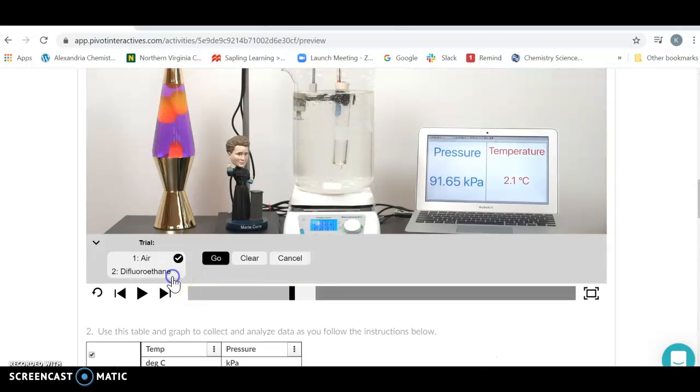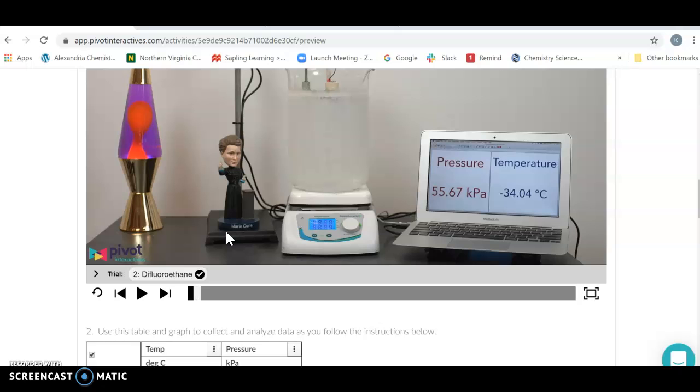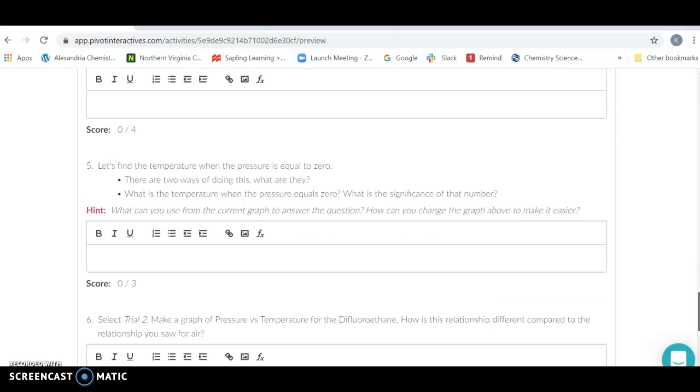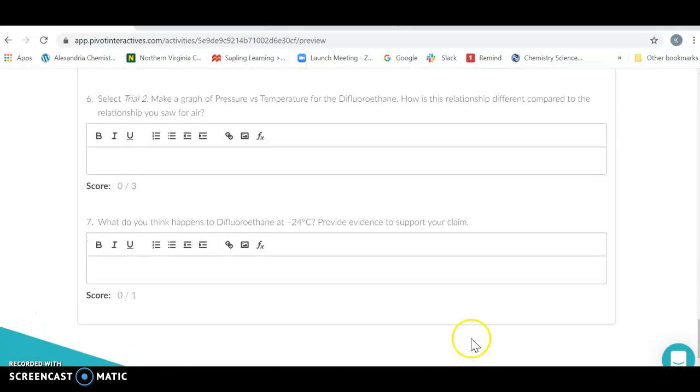Once you have that one done and you take a look at this, you're going to switch your gas from air to difluoroethane and give that one a shot. It's going to give you a very different graph. So we're going to make it nice and cold and then see what happens as you heat it up. This one is going to be more interesting as you heat it up because it's going to get a little strange point in it, and your job is to figure out why.